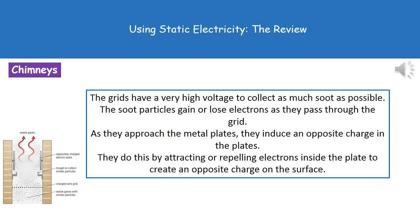The grids have a very high voltage, and the whole purpose behind that is to collect as much of that soot and dust as possible. As those particles pass through the grid they either gain or lose electrons, and if they gain or lose electrons then a charge is created on that particle. As they continue up the chimney and approach the metal plates, something important happens.